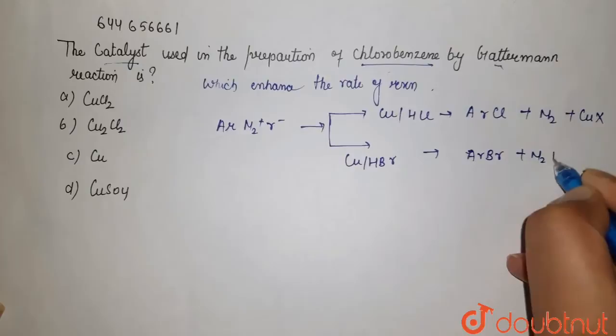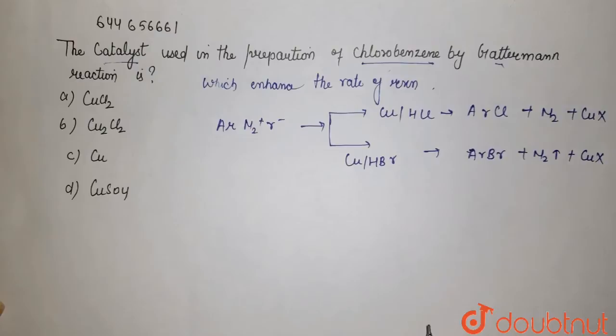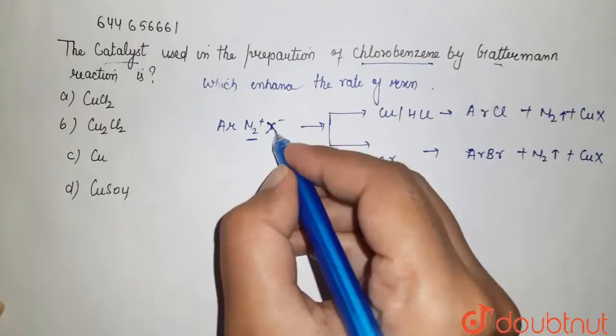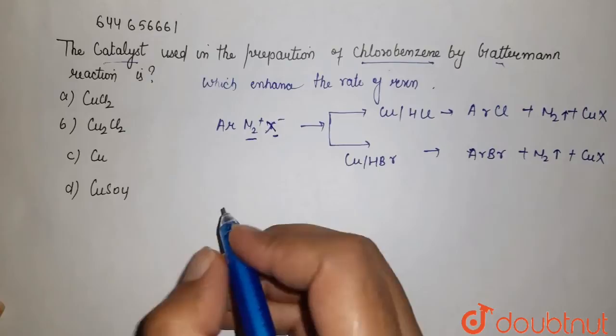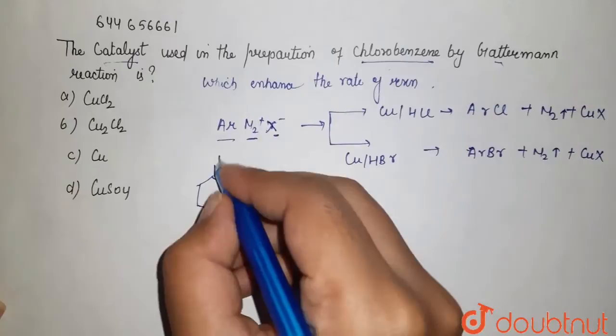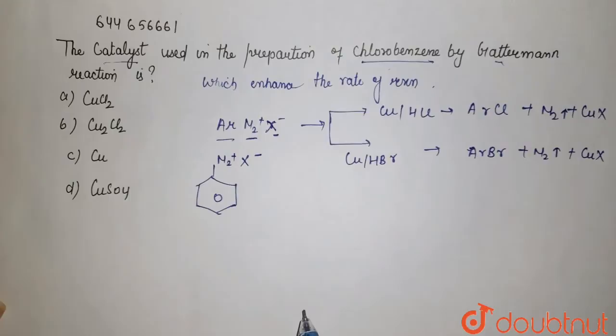Now if you see what is happening over here, N2 gas is liberating from here and this X over here, this halogen, is present over here which gets attached. Now if you see this, it means this is your benzene and here this N2 gas and X minus.